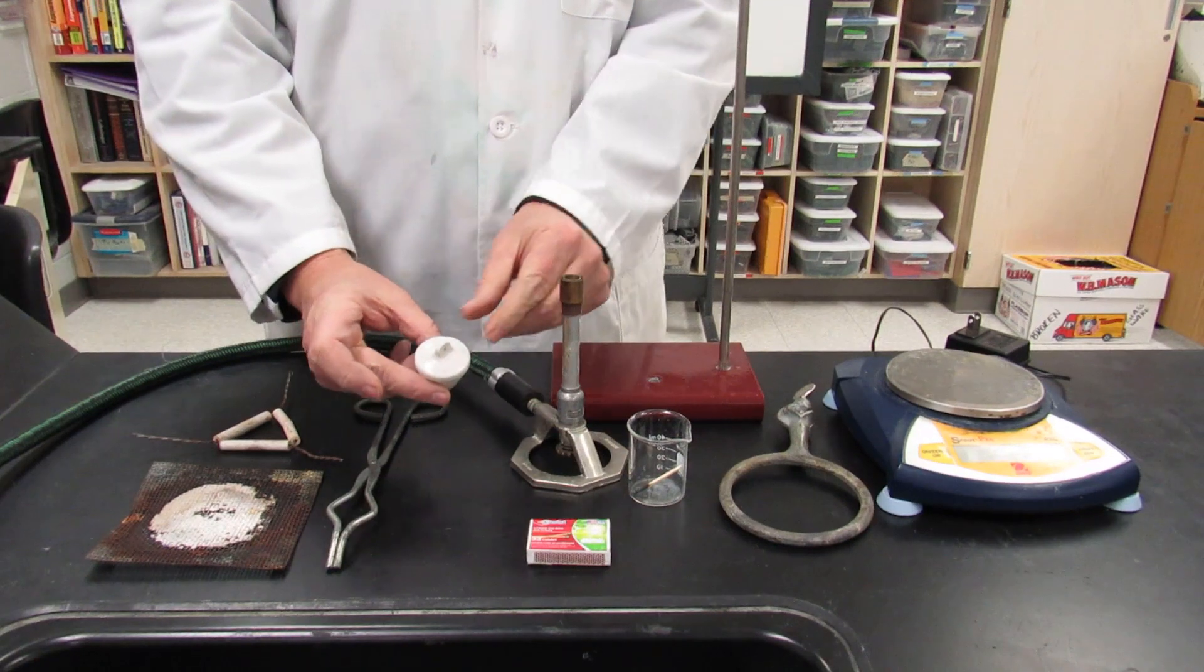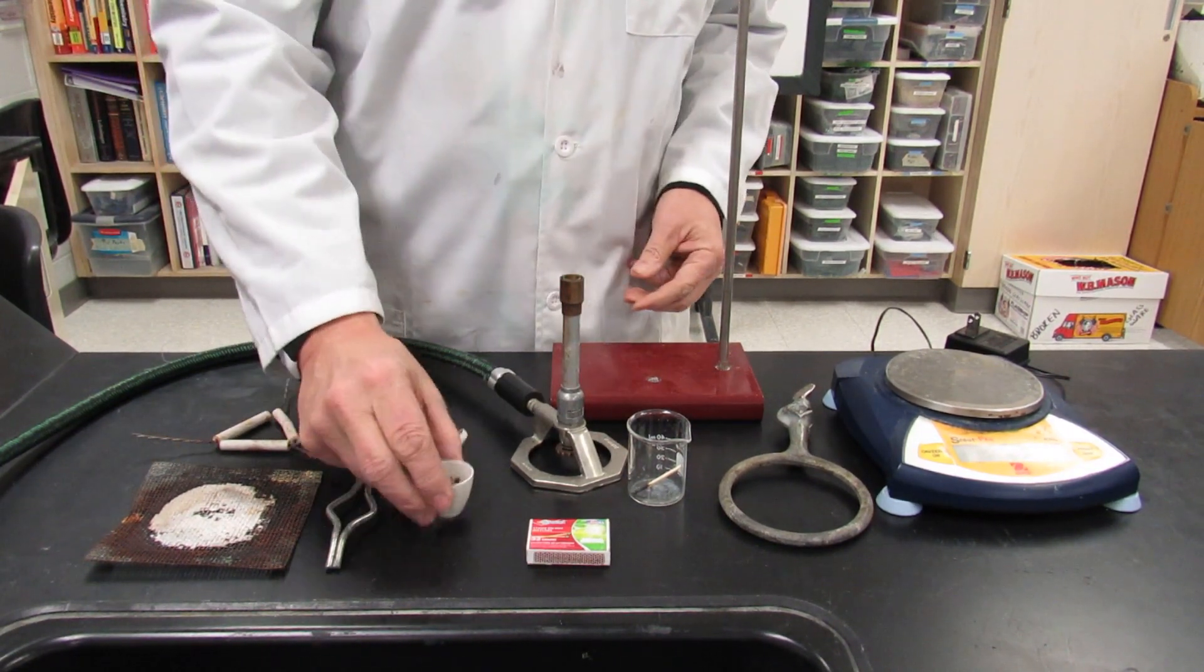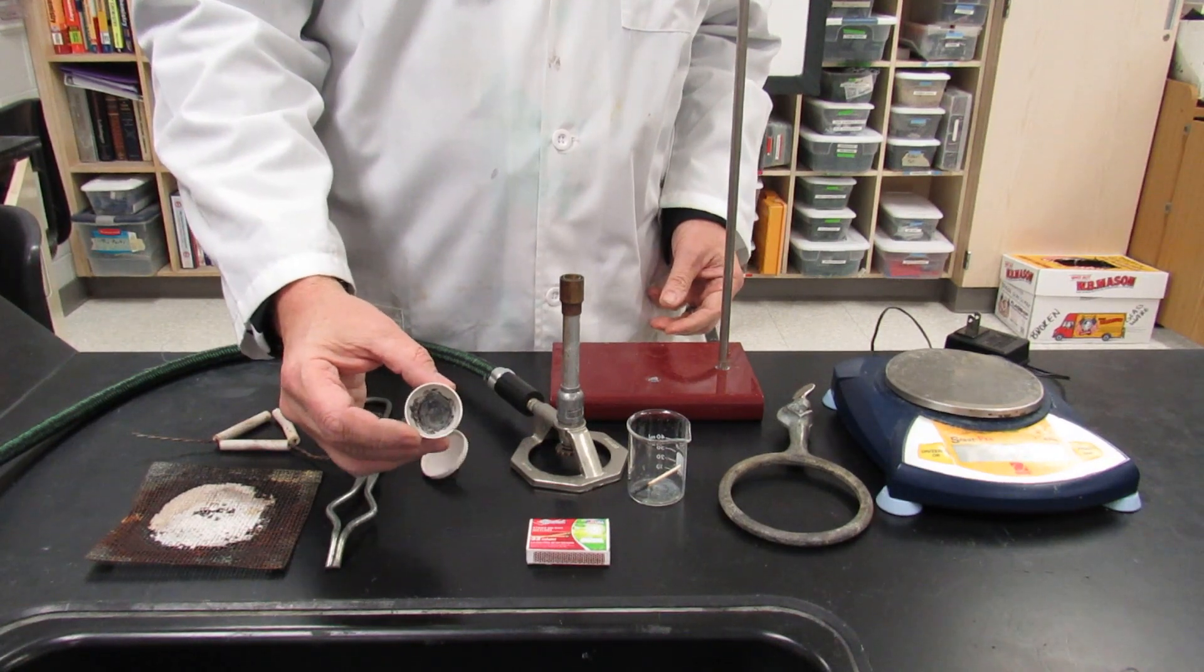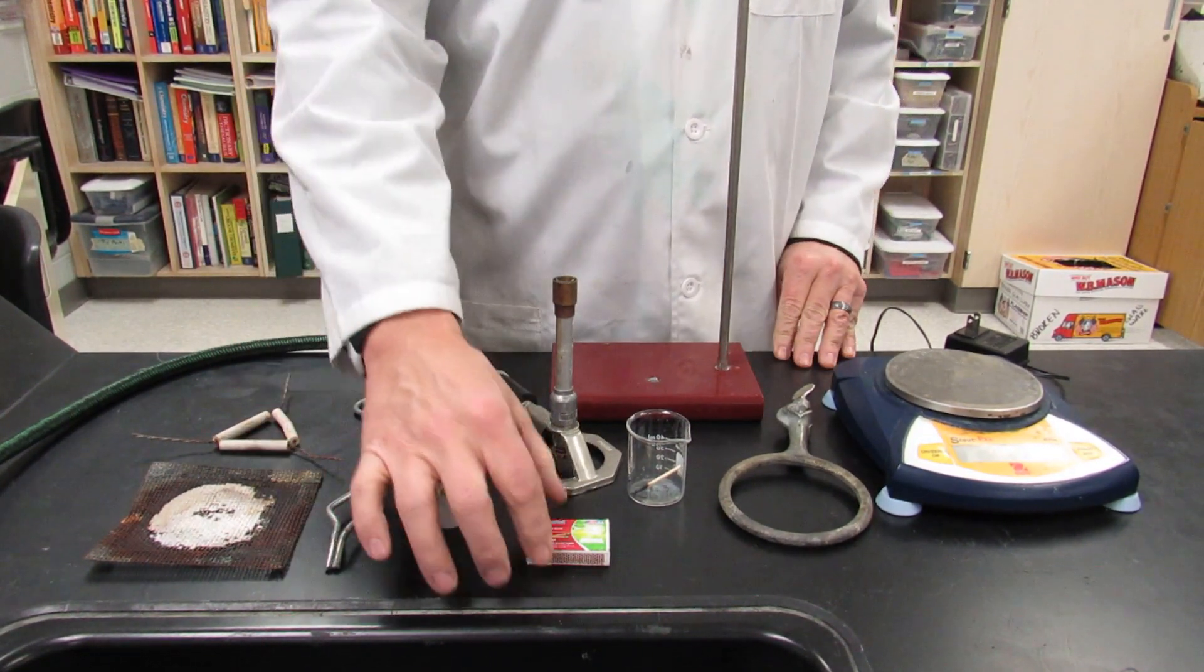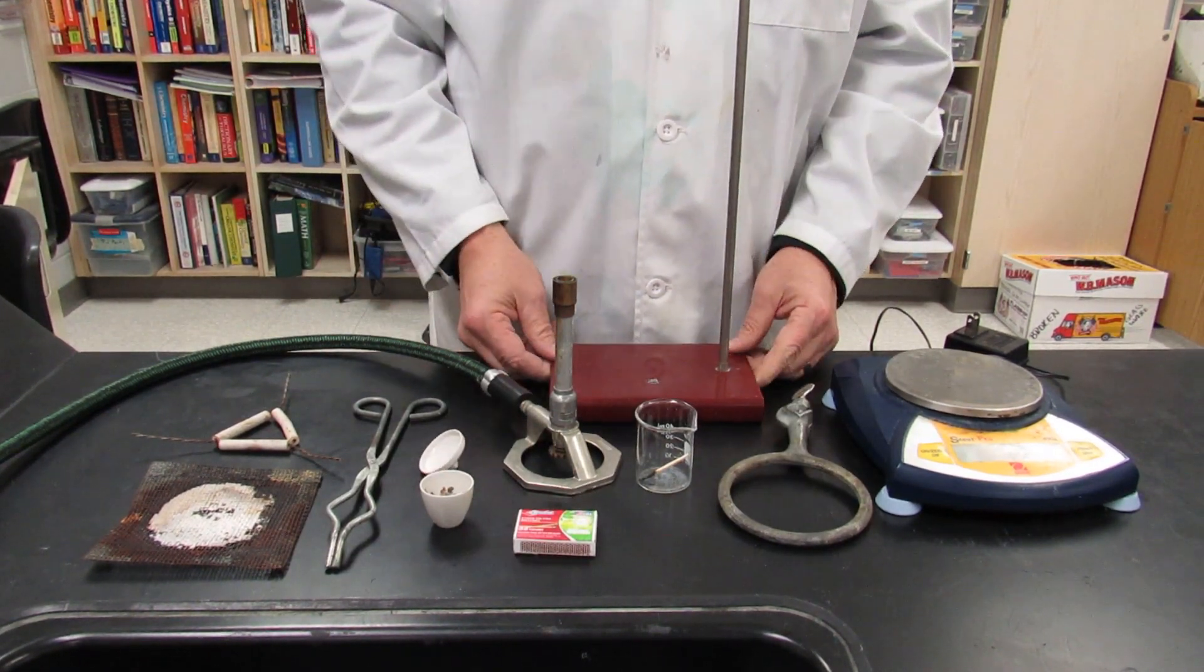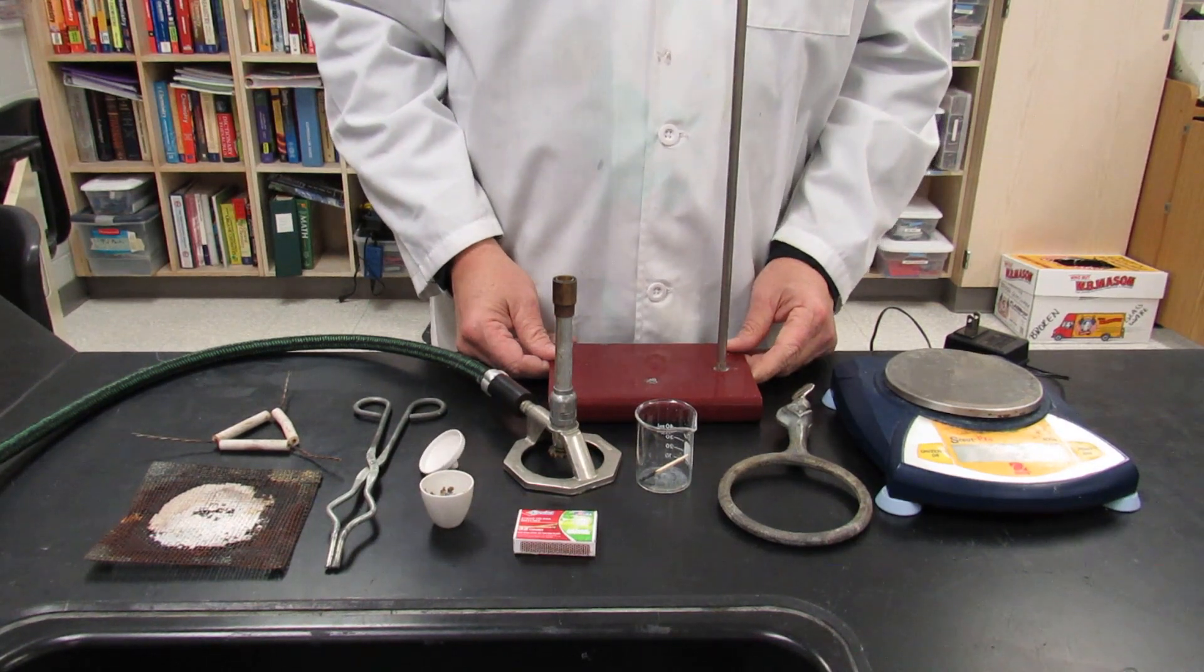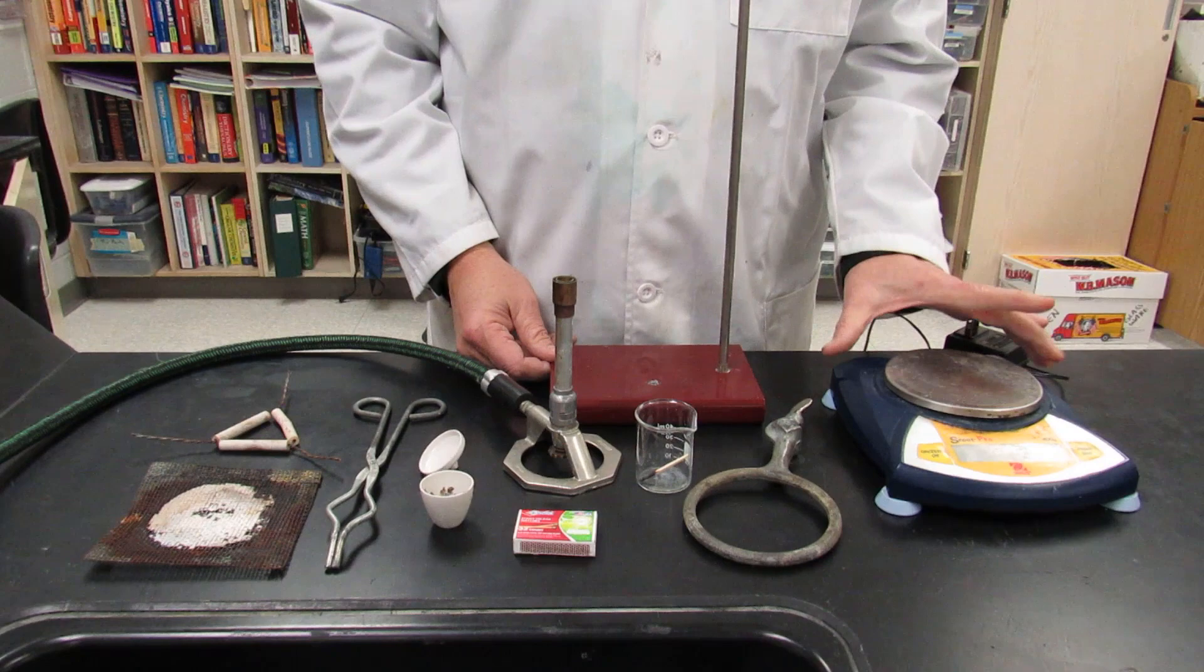The inside of the crucible is not very neat. It gets that way upon use. A Bunsen burner, matches, a small beaker for the waste matches, a ring stand, an iron ring, and a balance.